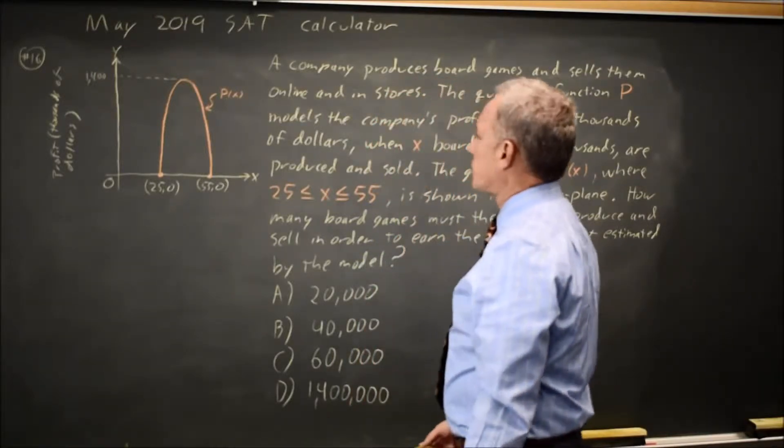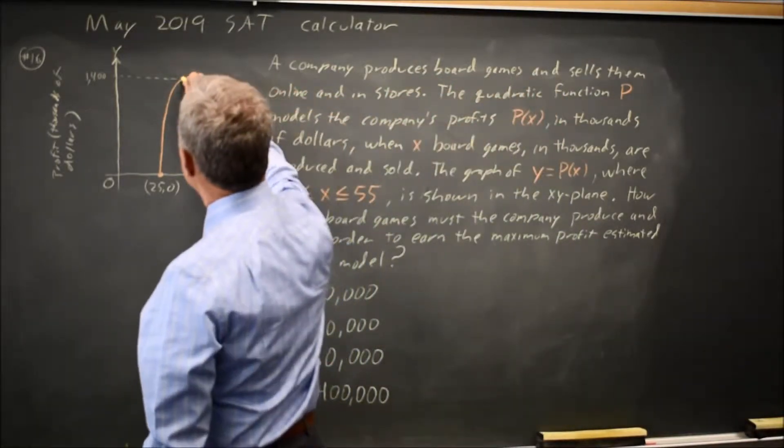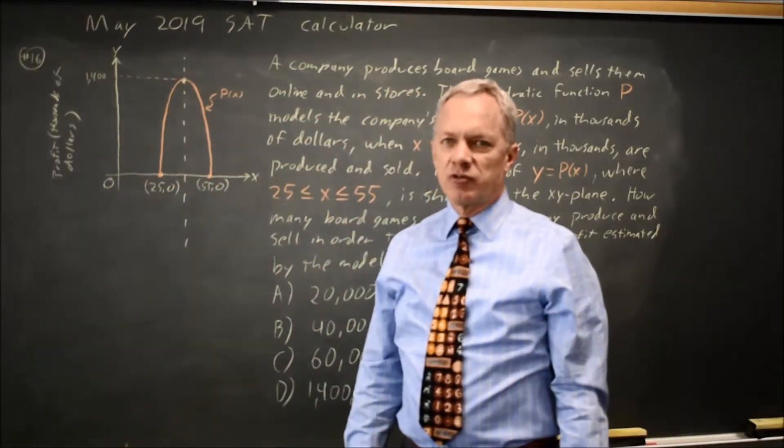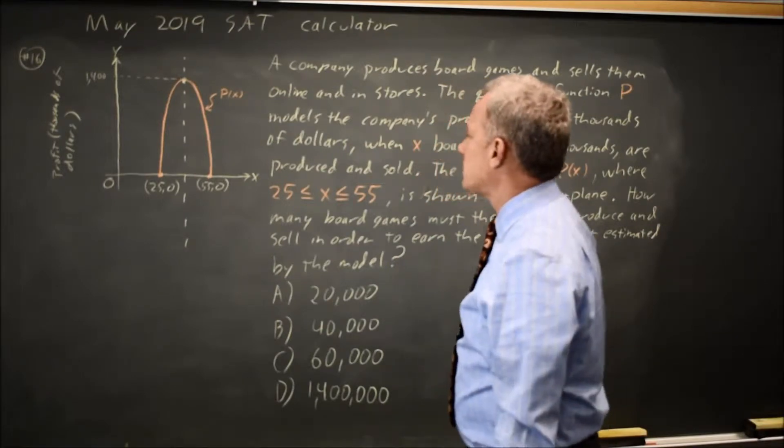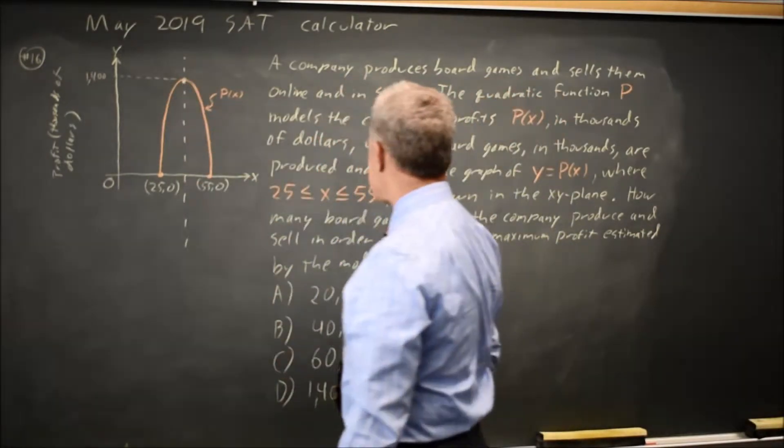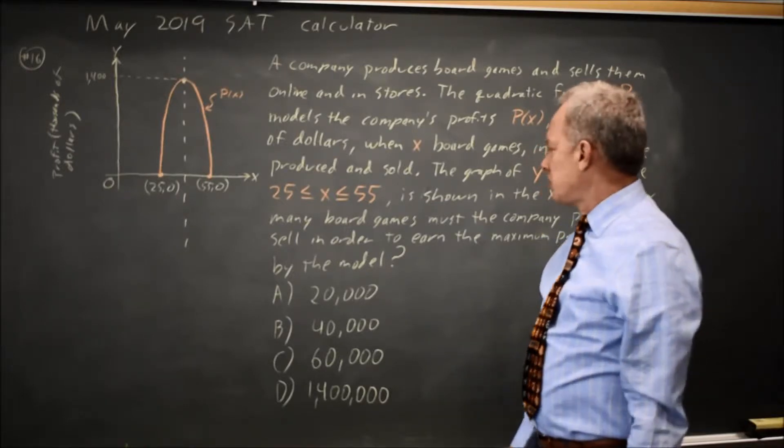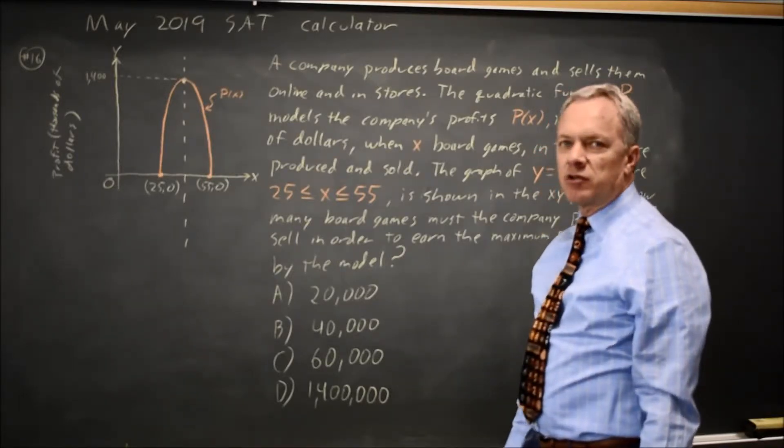Since this is quadratic, the graph is a parabola, and the axis of symmetry is a vertical line through the vertex, where the vertex is the maximum, and they're asking for the x value, the number of games produced and sold for a maximum profit.